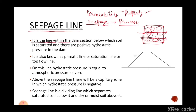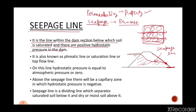The seepage line is the line within the dam section below which the soil is saturated and there is positive hydrostatic pressure in the dam. Suppose this is a dam made of earthen material, and this material is pervious in nature. Here is the water — the water will start flowing through the body of the dam and it will flow towards the downstream side. This line is called the seepage line. This seepage line cuts the downstream face of the dam at a point above the earth's surface. The part below this seepage line will be fully saturated, and the part of the dam above this seepage line will be dry or moist.